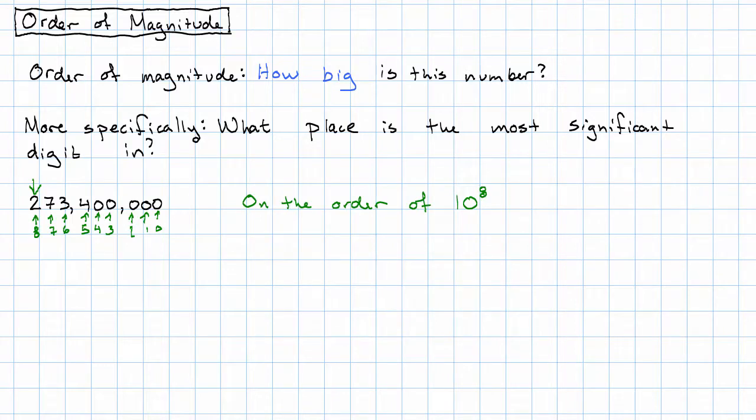That's really all there is to order of magnitude. Locate the most significant digit and find out what place it's in. I'll show you one more example. 0.000300. Locate the most significant digit. That's this 3. And then what place is that in? 0, negative 1, and so on. That's the place that corresponds to 10 to the negative 4. And so we say that this number is on the order of 10 to the negative 4.